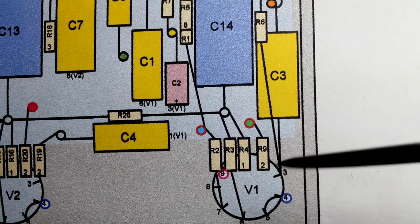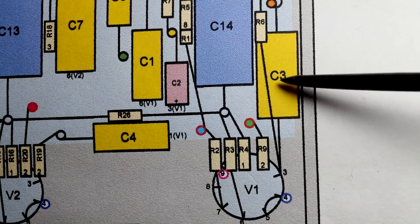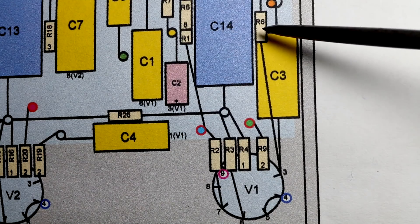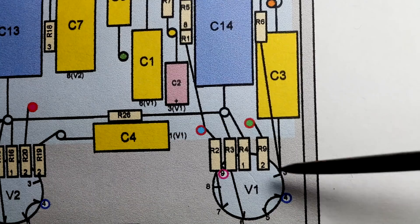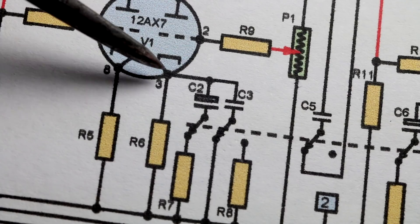Let's have a look what's connected to pin three. We've got C3 there, R6, and we've got C2.